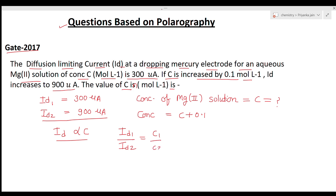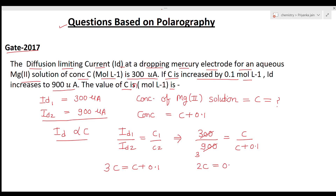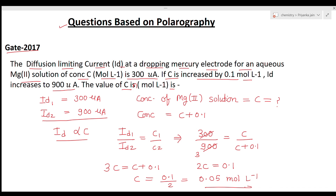Substituting the values: 300 / 900 = C / (C + 0.1). This simplifies to 1/3 = C / (C + 0.1), giving 3C = C + 0.1, so 2C = 0.1, therefore C = 0.1 / 2 = 0.05 moles per liter. So the value of C is 0.05 moles per liter.